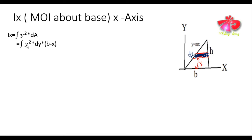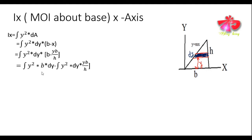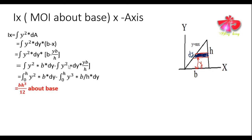Since the integration is along the y-axis, we change x in terms of y and take the limits from 0 to h. Solving this expression gives the moment of inertia about the base (x-axis): Ix = bh³/12.